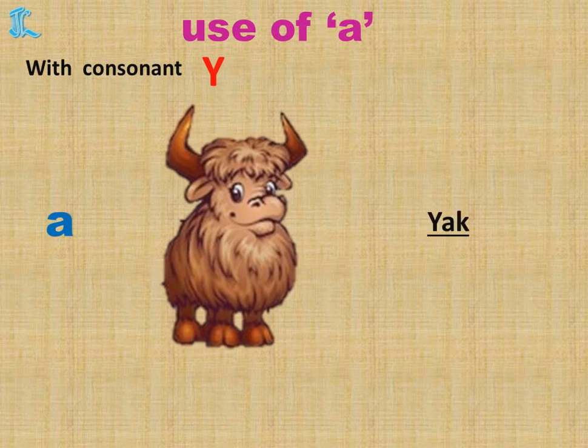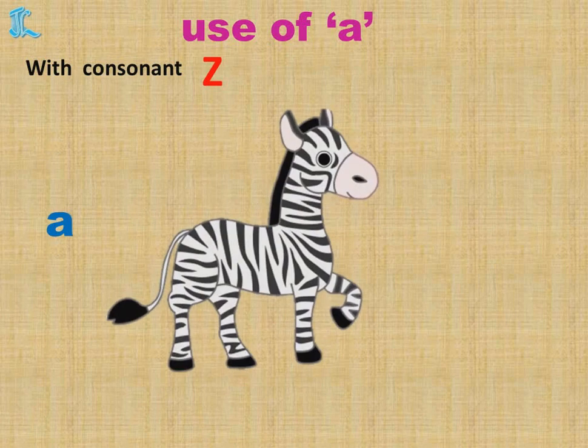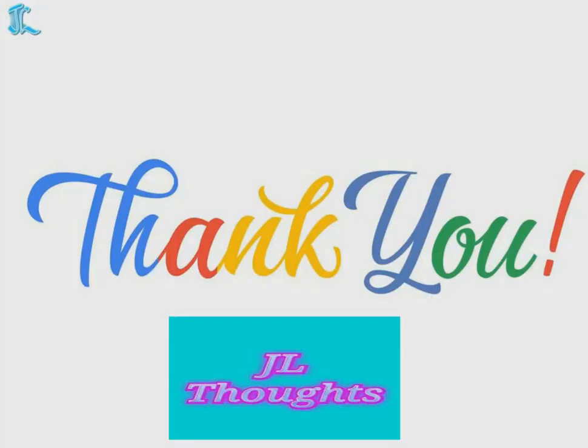A Yak. And the last consonant Z: A Zebra. Did you all understand where we use A? In front of words that start with a consonant sound. Thank you.